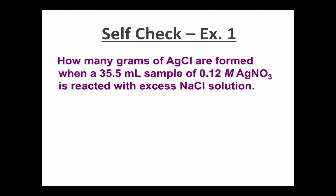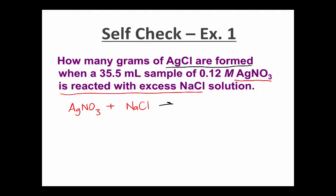Let's try a couple of examples. How many grams of silver chloride are formed when a 35.5 milliliter sample of 0.12 molar silver nitrate is reacted with excess sodium chloride solution? When solving a stoichiometry problem, we begin with a balanced equation. AgNO3 is reacted with NaCl — these are the two reactants. The wording also tells us that AgCl is formed, so it's a product on the right side. The sodium and nitrate make up the second product, NaNO3.